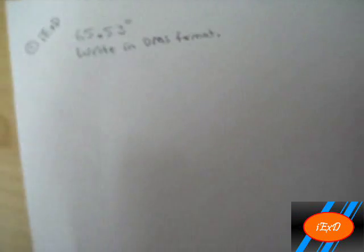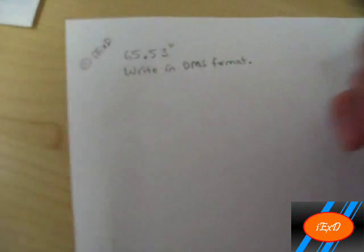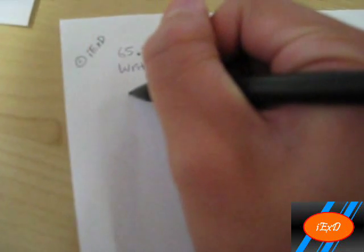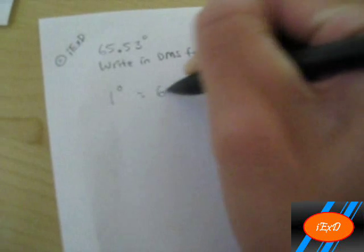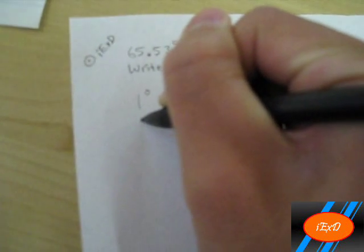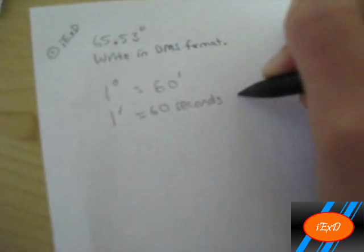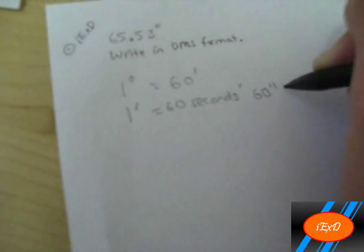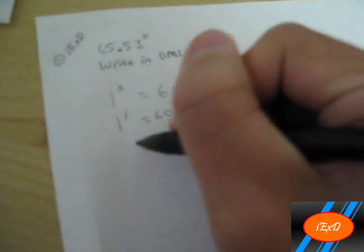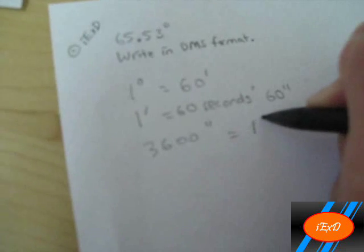Now first of all, we have to learn some basic rules first, some units of conversion. 1 degree equals 60 minutes, 1 minute equals 60 seconds, which is also like this. And 3600 seconds equals 1 degree.